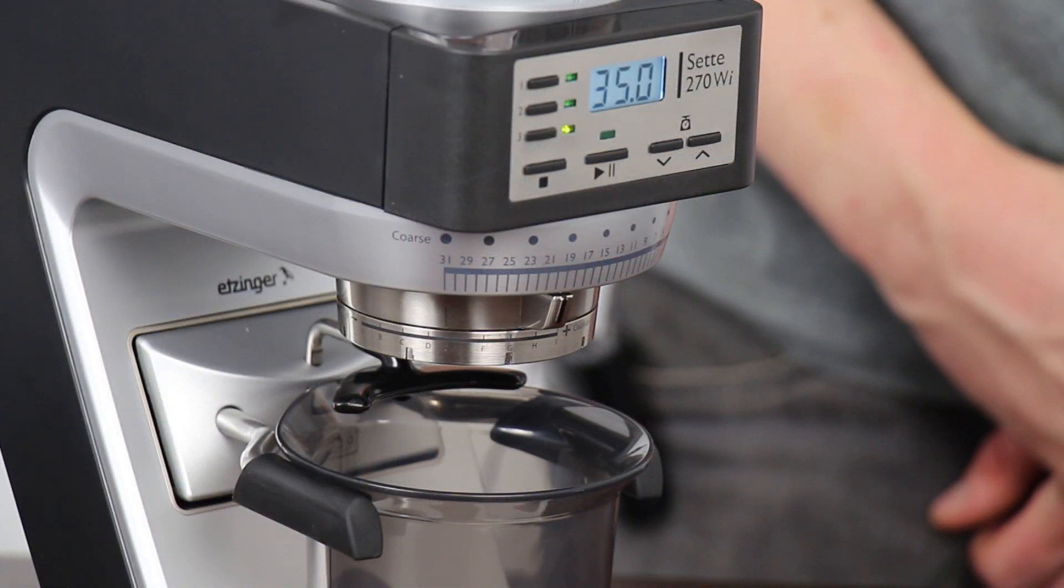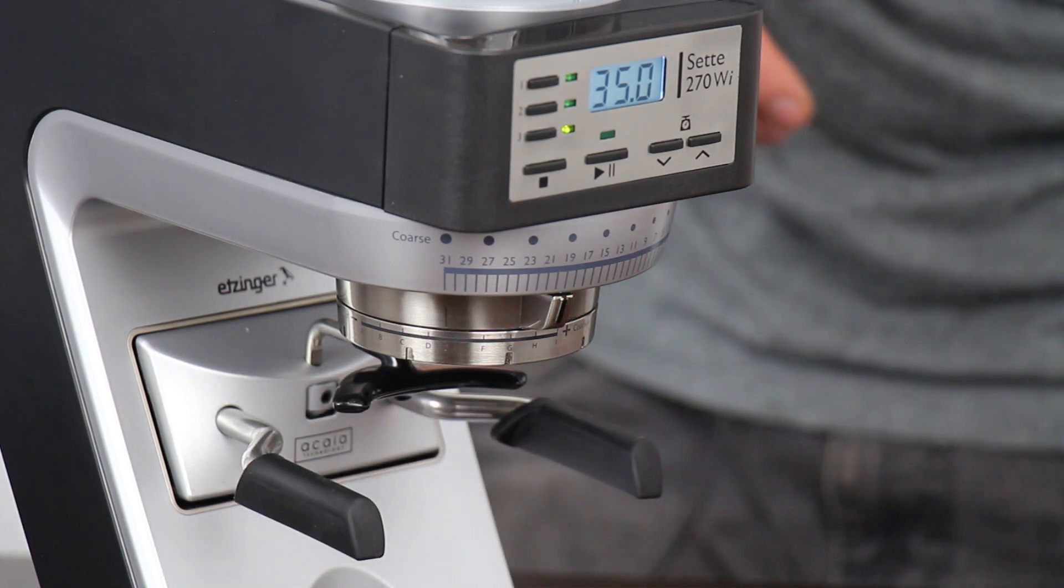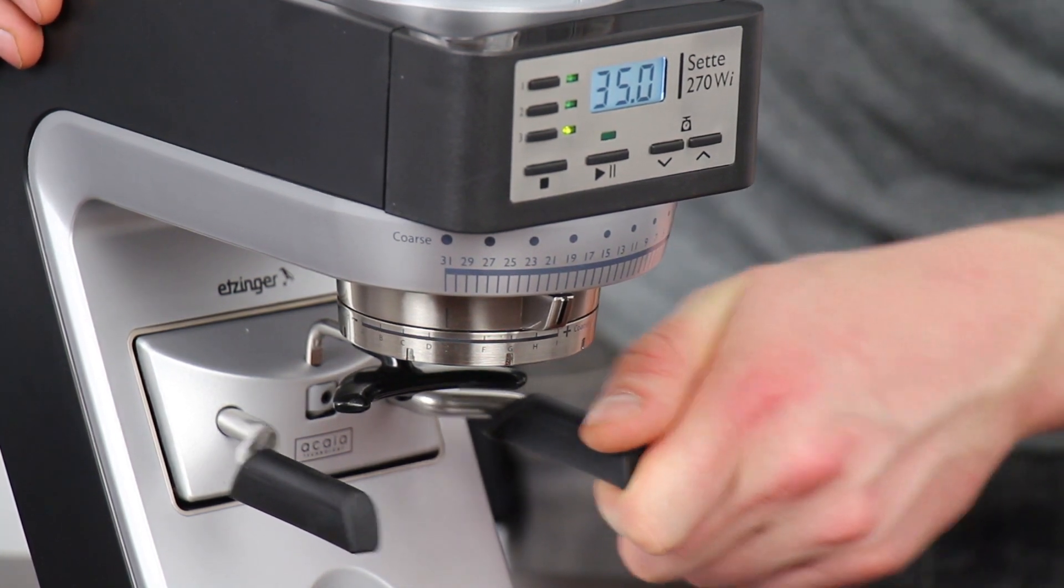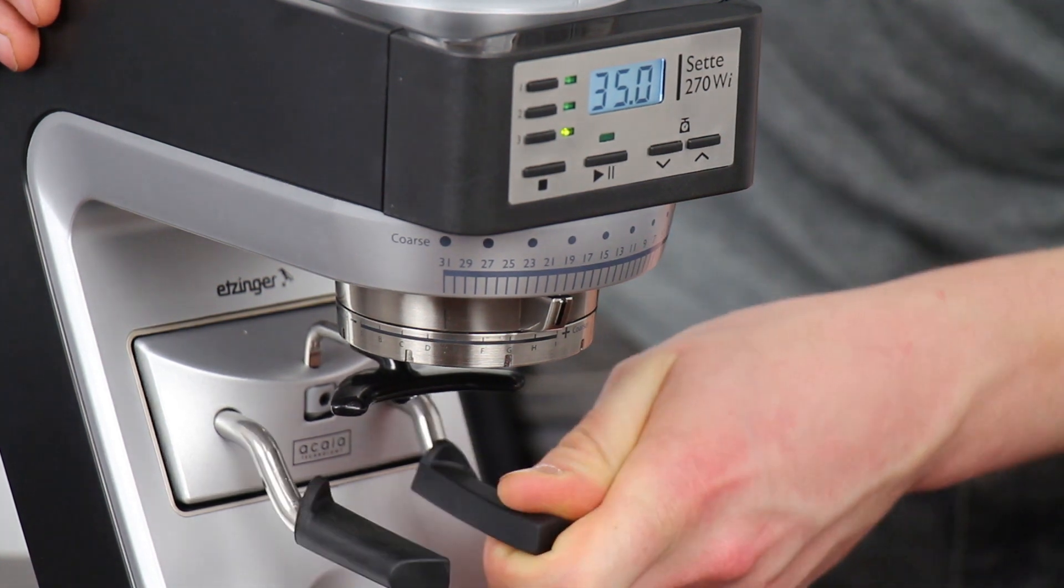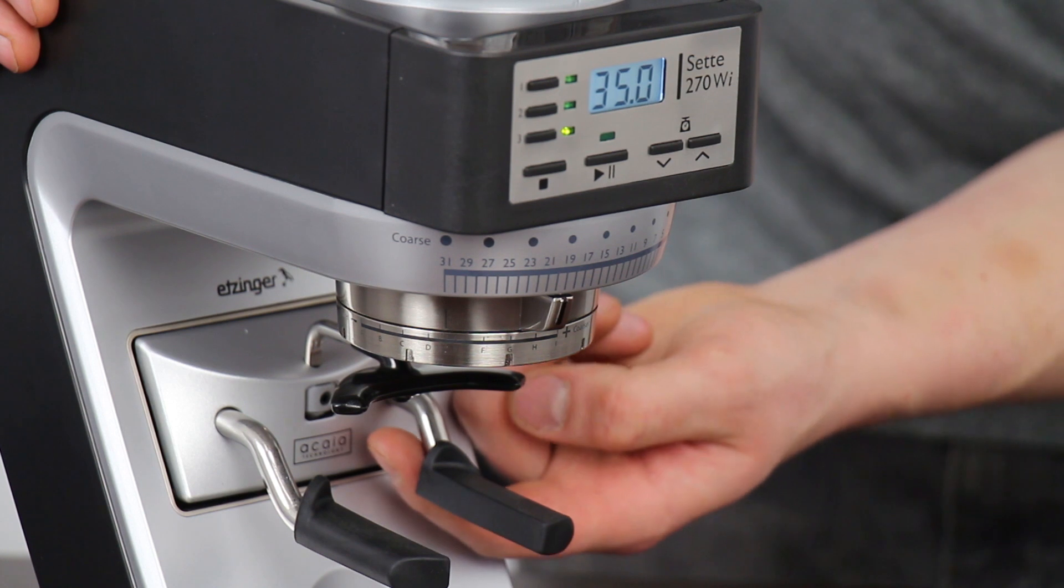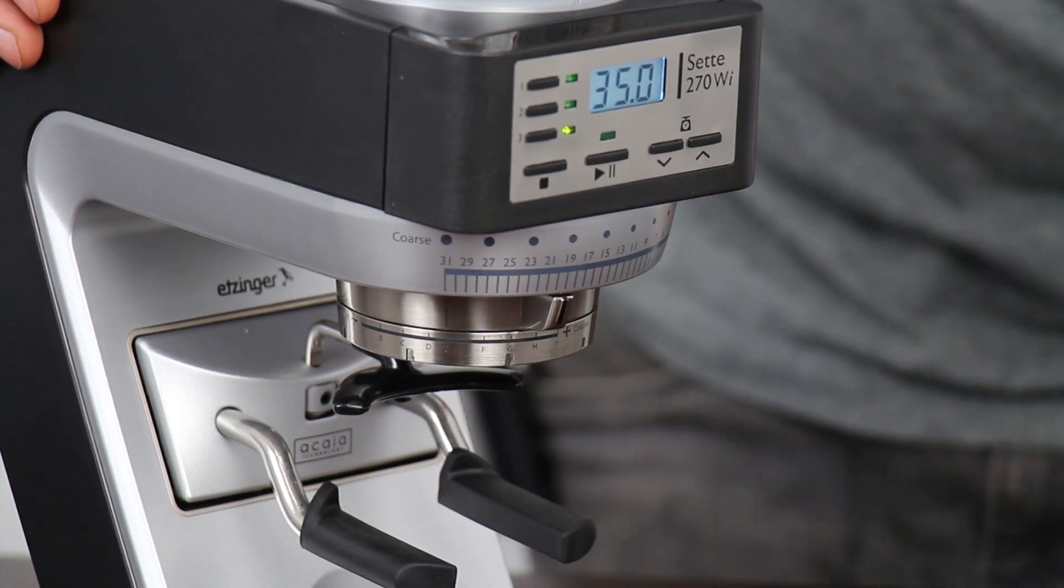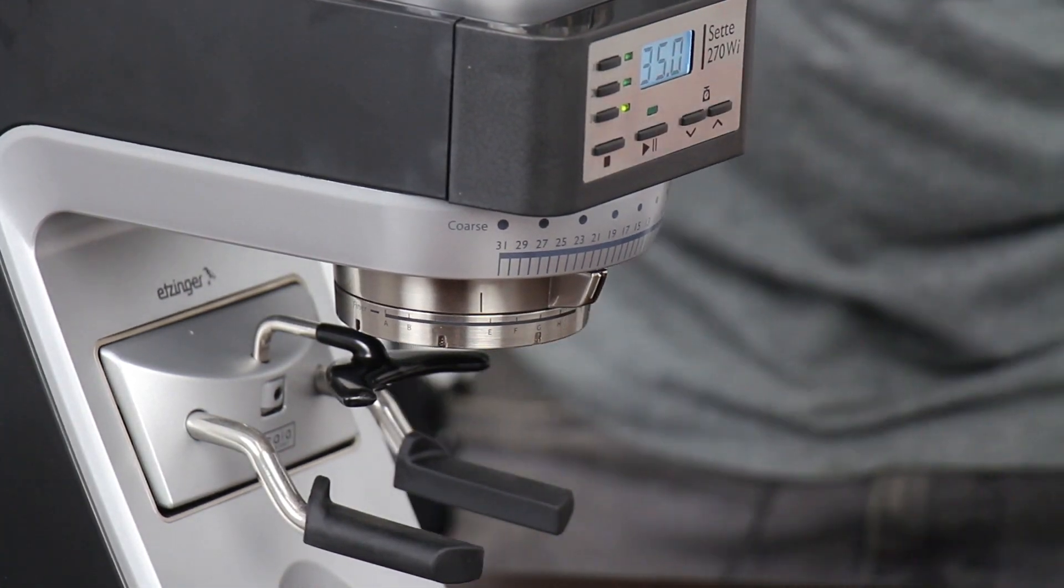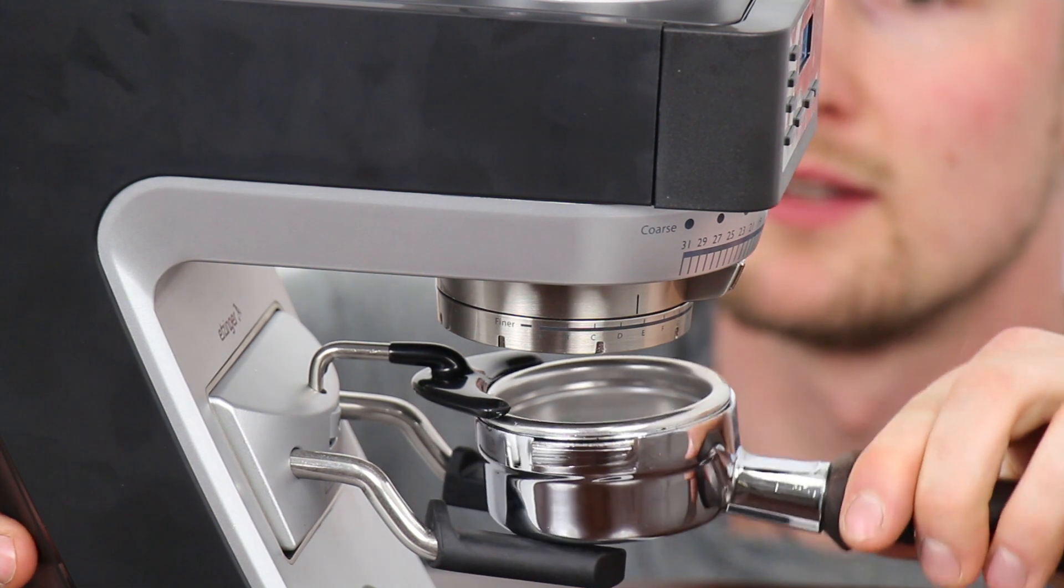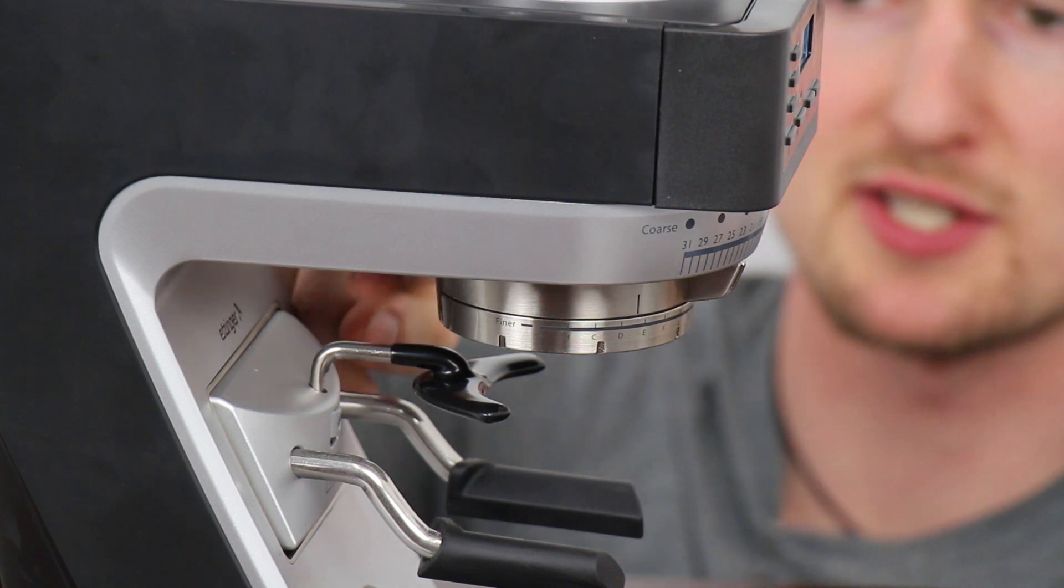Now it's time to get the Wi set up to grind by weight into my portafilter. I'm going to go ahead and remove the bin and convert the arms back into portafilter mode. Remember to do that you press in on just the right arm and then you can pivot it down, the left arm will follow. You want to make sure that the arms do lock into place when you convert them. Now that it's been converted to the portafilter mode I'm going to see does my portafilter fit out of the box and it's a close fit. I can get it in there but it's not well supported so I need to adjust my hook.